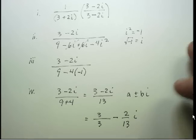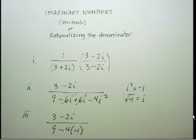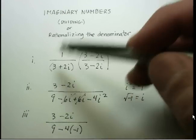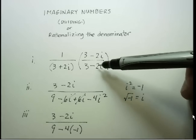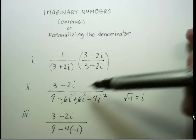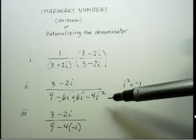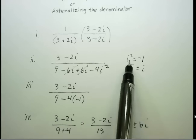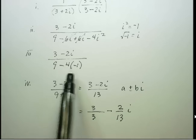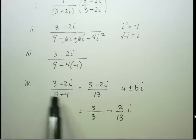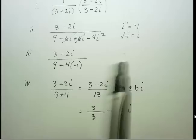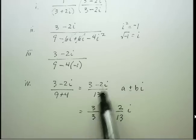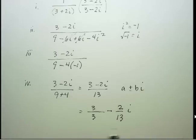Let's review quickly. If you've got an imaginary number in your denominator, multiply by the conjugate — just change the sign in the middle and keep the terms the same. The middle terms will cancel and you'll get an i² term — remember to change that to negative 1. Clean it up, and if your teacher asks for a plus bi form, distribute the denominator to each term in the numerator.